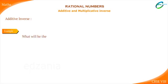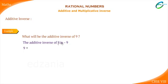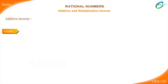What will be the additive inverse of 9? Yes, the additive inverse of 9 is minus 9, as 9 plus minus 9 is equal to zero. If we consider a number, say minus 3, what will be the additive inverse of minus 3? It will be 3, as minus 3 plus 3 is equal to zero.